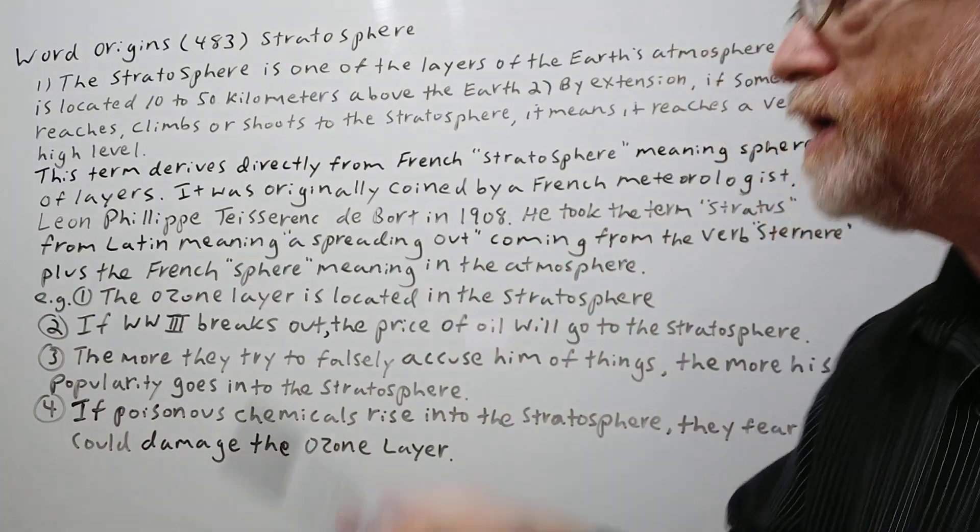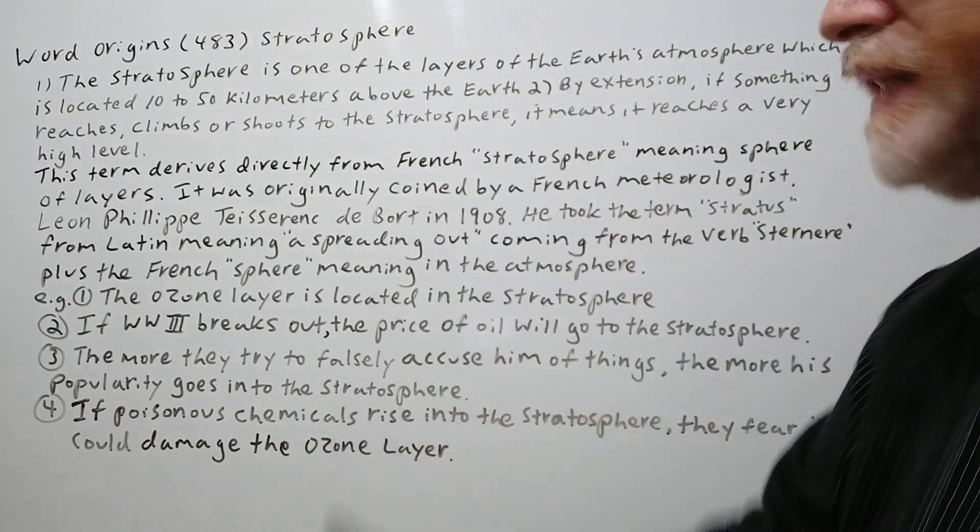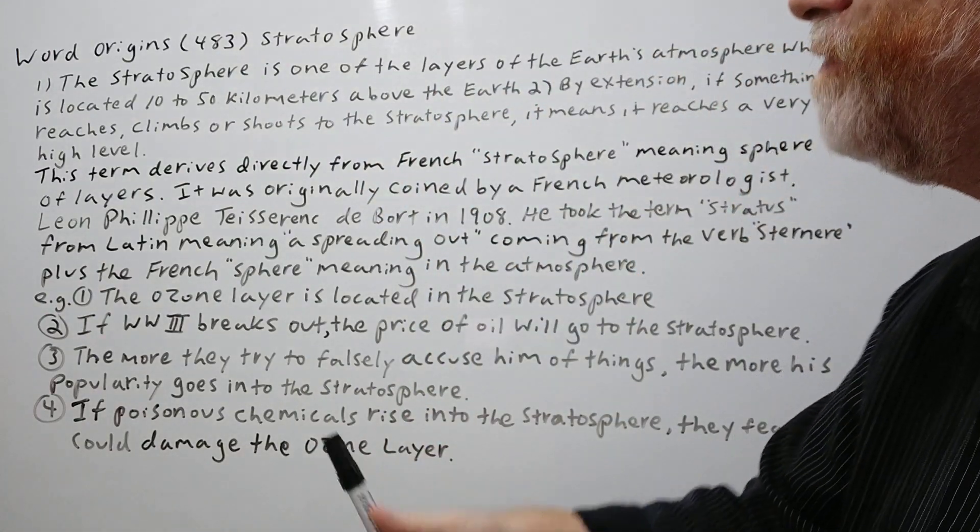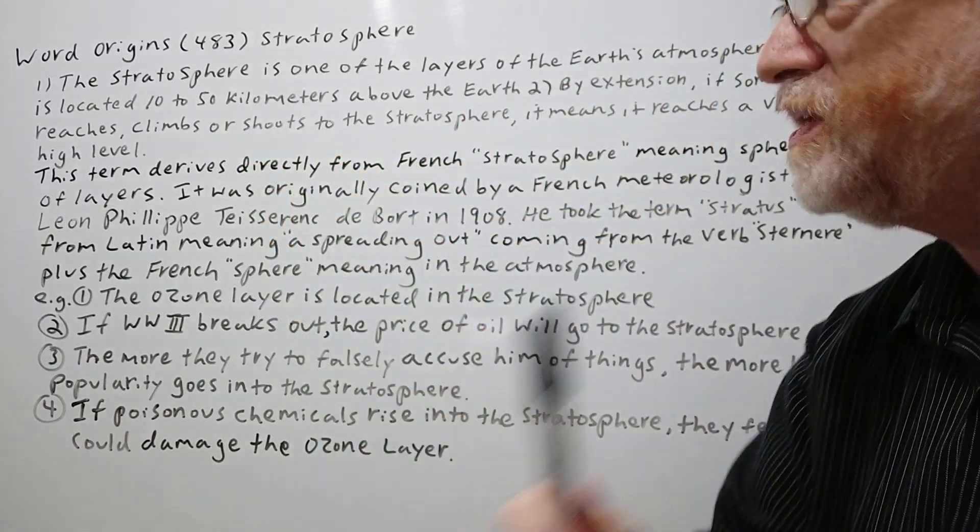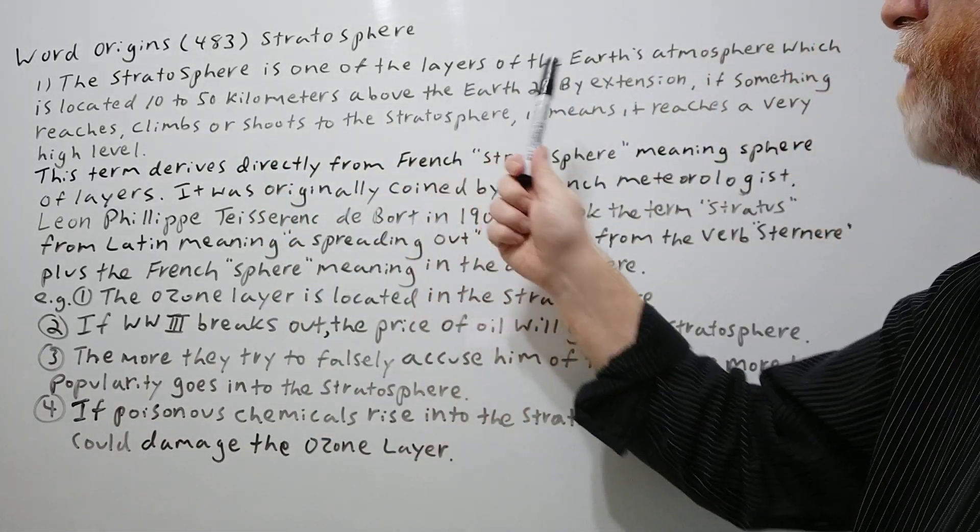All right, we've got two meanings. The first one, the stratosphere is one of the layers of the Earth's atmosphere which is located 10 to 50 kilometers above the Earth.